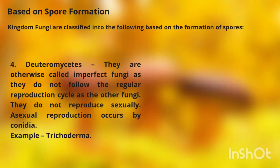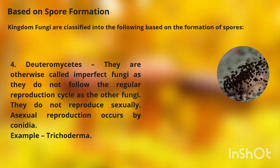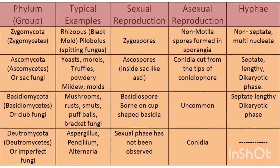Next, we have the Deuteromycetes or Deuteromycota, otherwise called the imperfect fungi, as they do not follow the regular reproduction cycle of other fungi. They do not reproduce sexually. Asexual reproduction occurs by conidia. An example is Trichoderma. In summary, the four groups of fungi based on reproductive structures are: Zygomycota with zygospores, Ascomycota with ascospores, Basidiomycota with basidiospores, and Deuteromycota, which has no form of sexual reproduction.